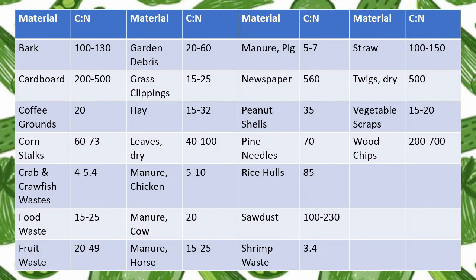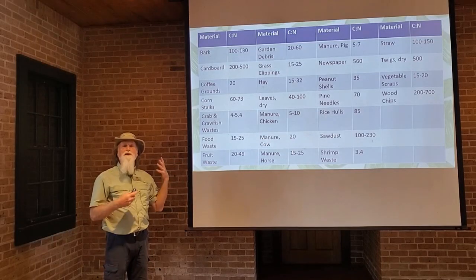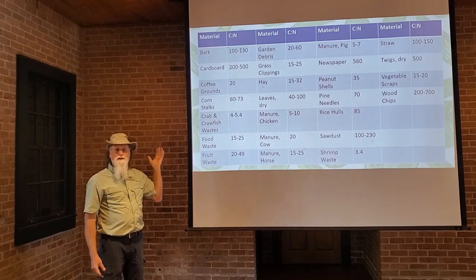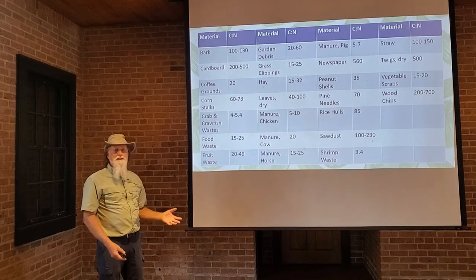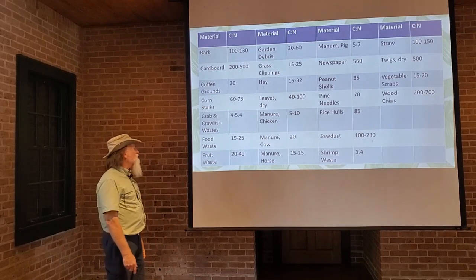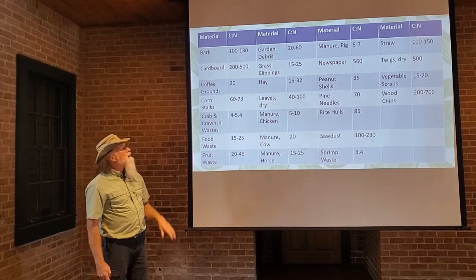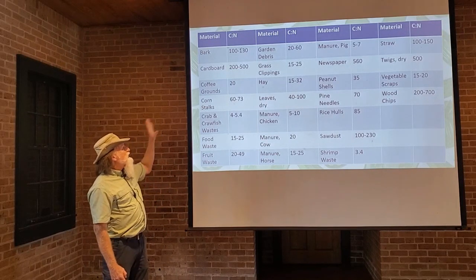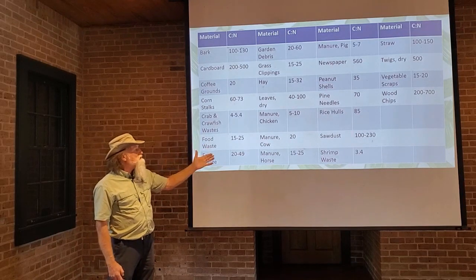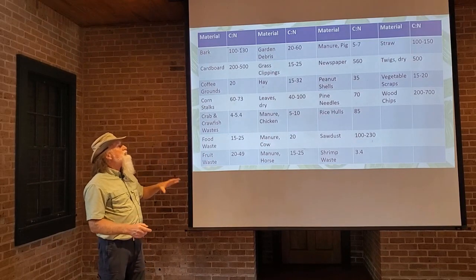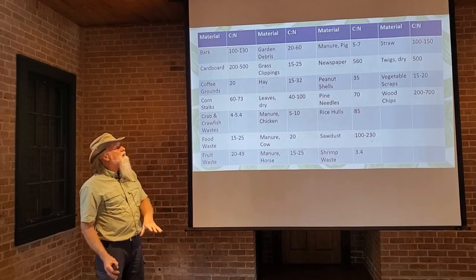Crab and crawfish waste — as mentioned earlier — you may or may not want to put those in your compost pile, but if they're properly treated, cleaned, and ground up into small particle size, there's going to be less chance of odors. They have a pretty low carbon-nitrogen ratio, so those would be another green material. This table gives you an idea of which things would be considered brown materials with a high CN ratio, and green materials with a low CN ratio.